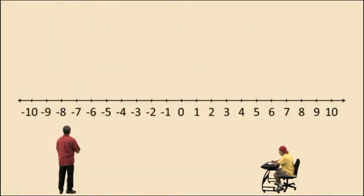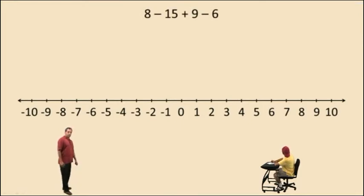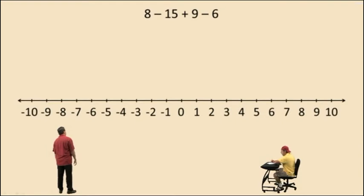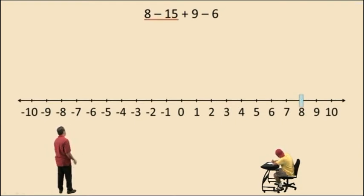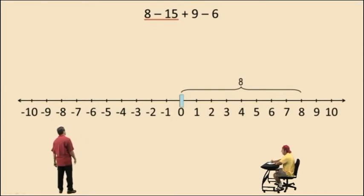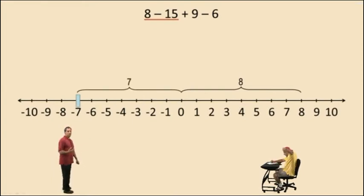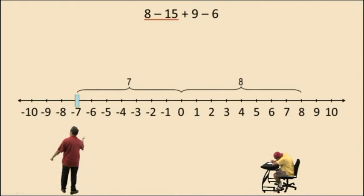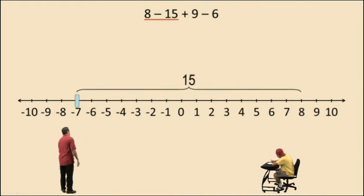Let's look at this problem: 8 subtract 15 plus 9 subtract 6. Let's begin with 8 subtract 15 — start at 8 and move to the left 15 times. If we move 8 units to the left we're at 0, and now we have to move 7 more, because 8 plus 7 is 15 — we had to move 15 units total to the left. So 8 subtract 15 is negative 7.